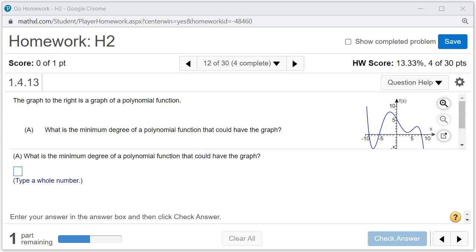Let's look at homework H2, problem number 12. So we have the graph of a polynomial function here and we want to answer the following questions. Part A: What is the minimum degree of a polynomial function that could have this graph?